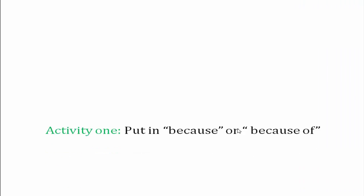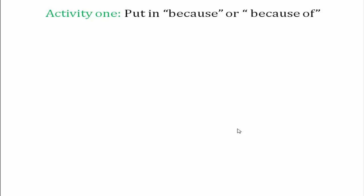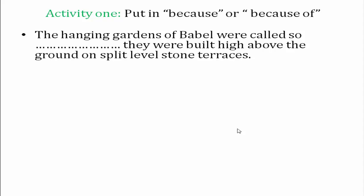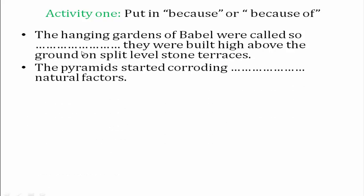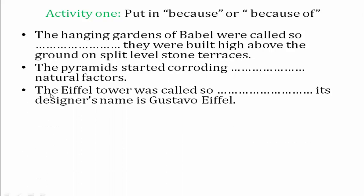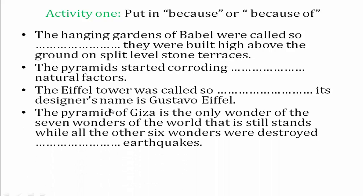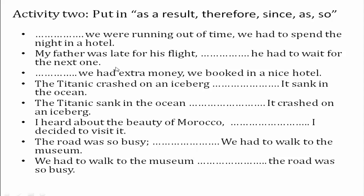Let's have some activities. Activity one: put in 'because' or 'because of.' The Hanging Gardens of Babel were called so because they were built high above the ground on split-level stone terraces — there is a verb, so use 'because.' The pyramids started corroding because of natural factors. The Eiffel Tower was named after its designer Gustavo Eiffel. The Pyramid of Giza is the only wonder still standing while all the other six were destroyed because of earthquakes.